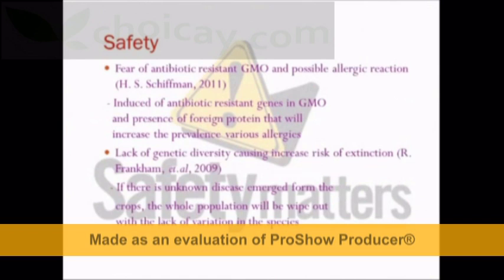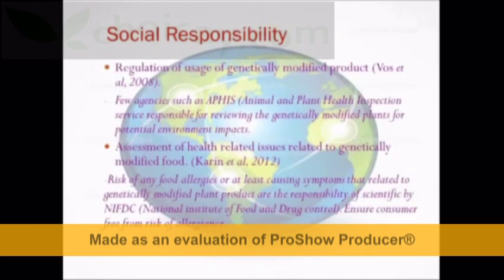As for safety issues, there is a possibility that GMOs may exhibit superior characteristics which may lead to allergic reactions. There may also be a lack of genetic diversity in the population, which could wipe out the whole population if a new disease outbreak occurs. In terms of social responsibility, agencies involved in monitoring GMOs must have strict review processes regarding potential environmental impacts and the risk of allergens.